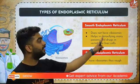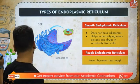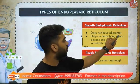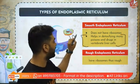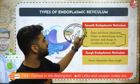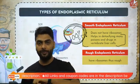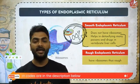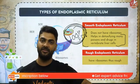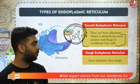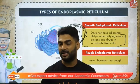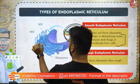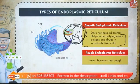Smooth ER helps in detoxifying many poisons and drugs in the liver cells. This is super important — a hundred percent guaranteed exam question: what helps to remove toxins, poisons, and drugs from the body? It is the smooth endoplasmic reticulum present in the liver cells of vertebrates. Rough endoplasmic reticulum has ribosomes on it — you can see the dots on the surface — that is why it is called rough.